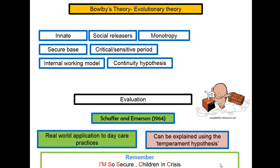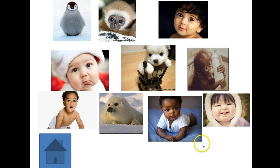Bowlby's theory is an evolutionary theory. In a nutshell, evolutionary theory is all about survival of the fittest. Human babies unfortunately can't do things for themselves when they're born — they need someone to feed them, clothe them, keep them warm, and protect them. It's all about survival. So we have been born with particular features — this is what we call innate.